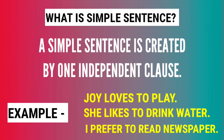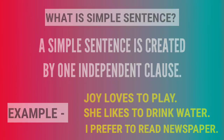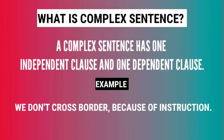For example: 'Joy loves to play,' 'She likes to drink water,' 'I prefer to read the newspaper.' Those sentences are not dependent on other sentences — they are independent, so they are simple sentences.